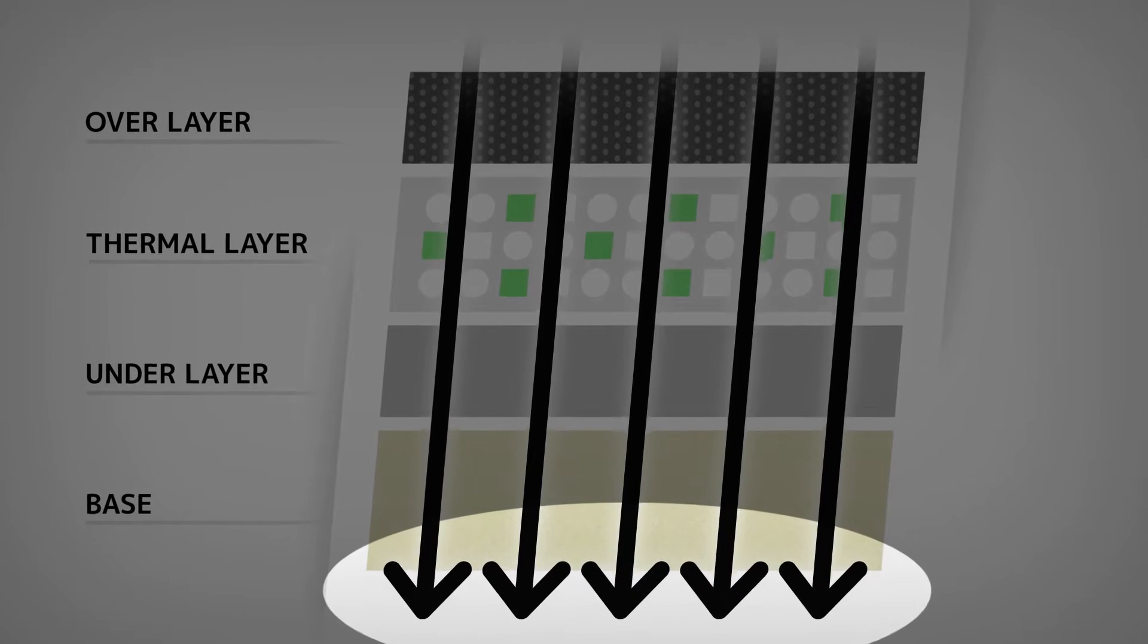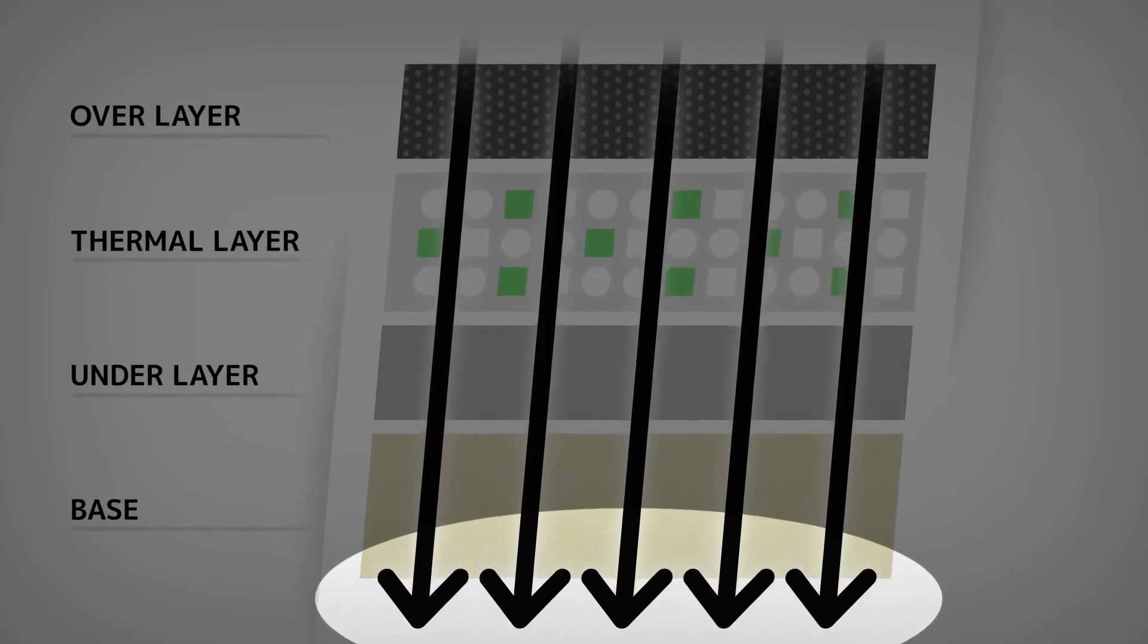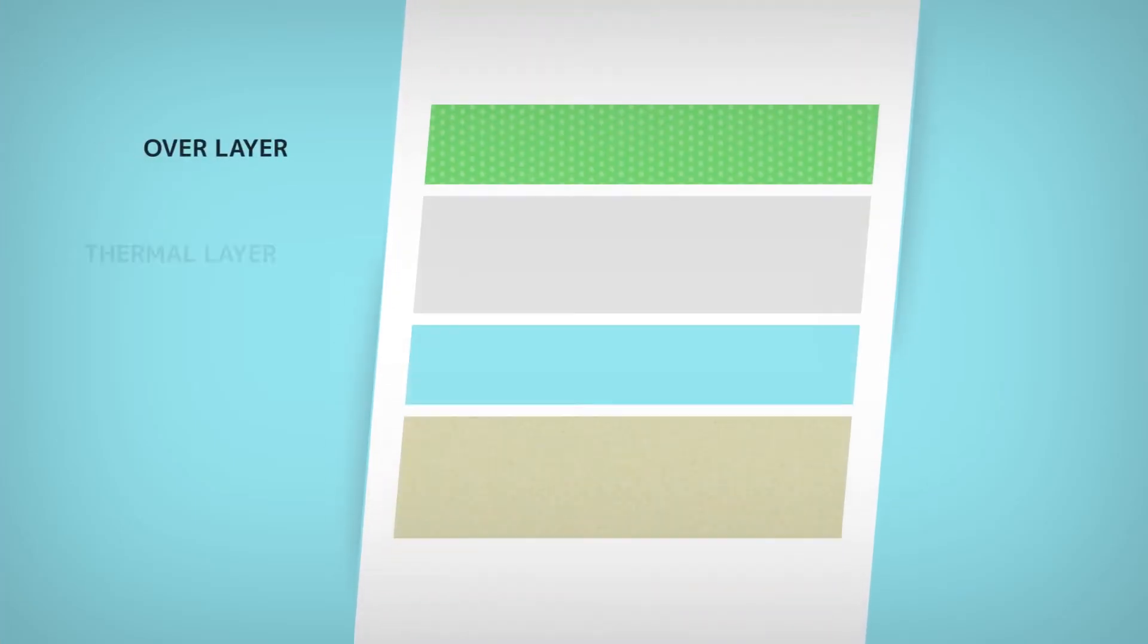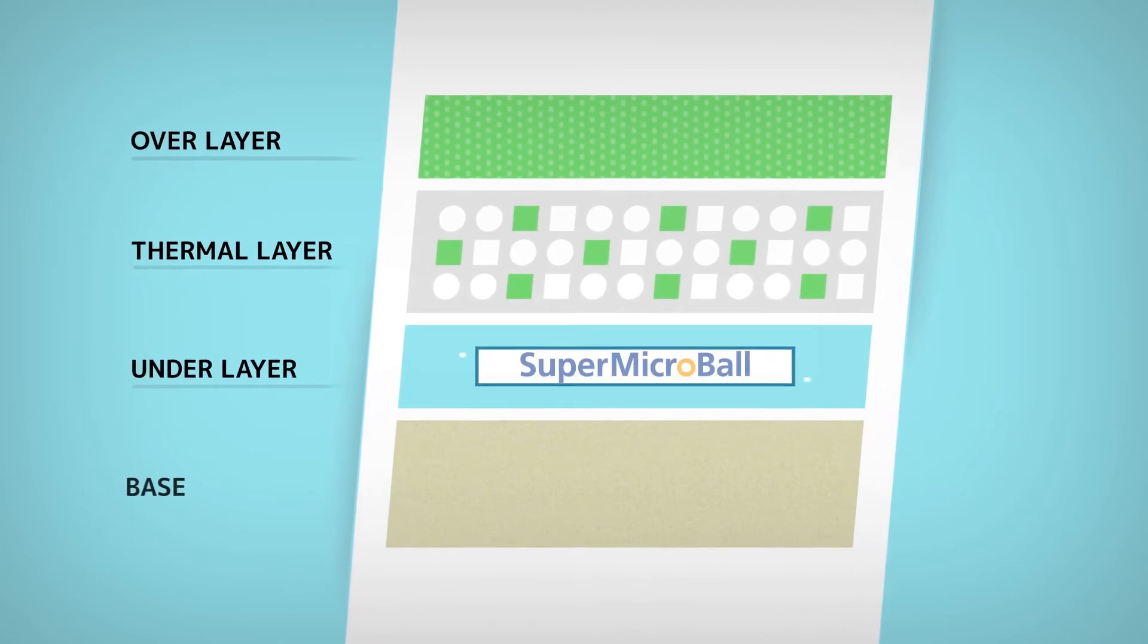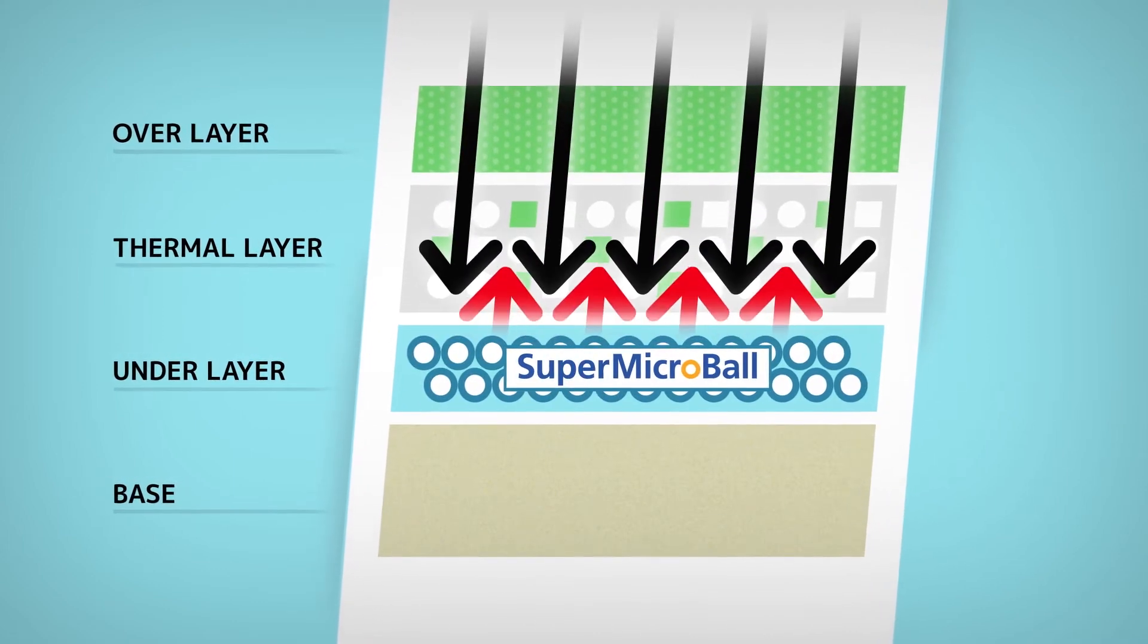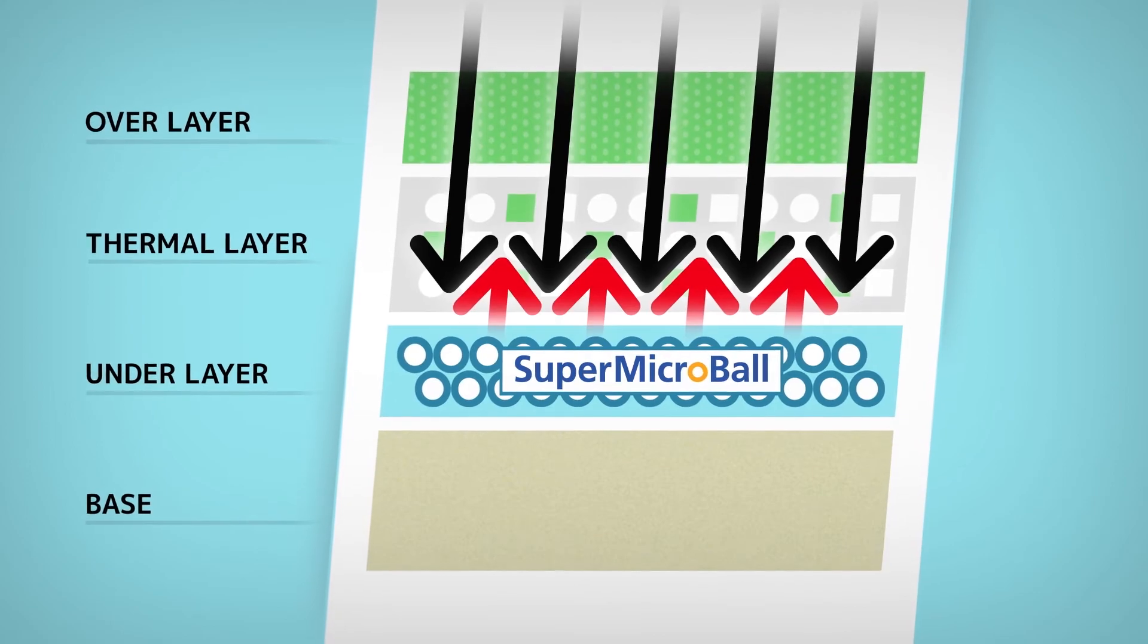The average label often underperforms because energy can escape through the base. With RICO's Supermicroball Technology, the thermal energy is redirected back into the thermal layer, resulting in several advantages.